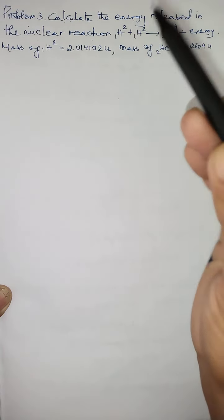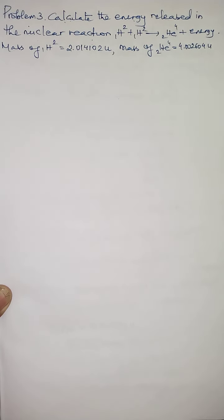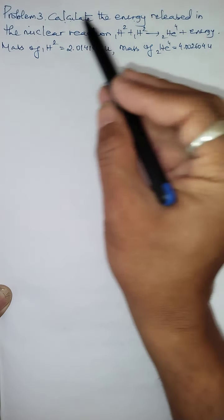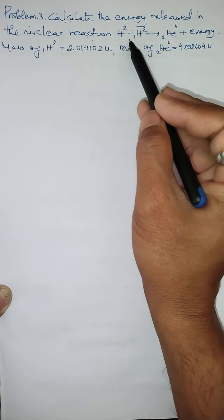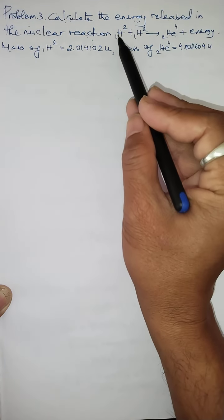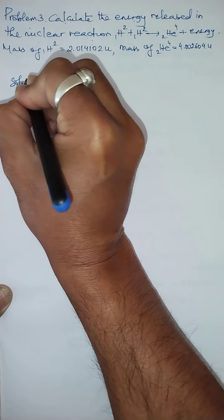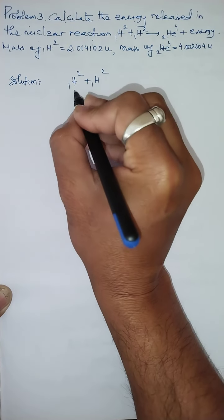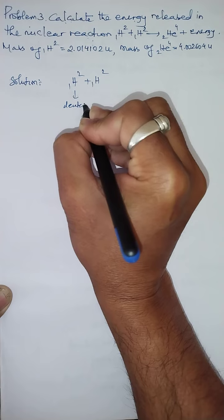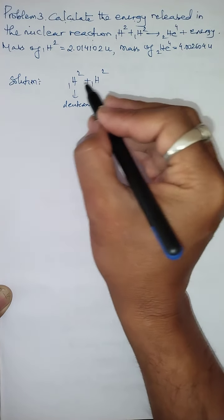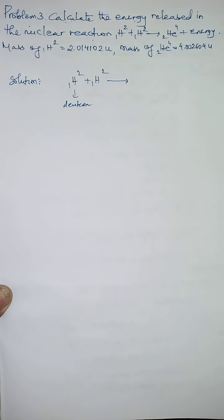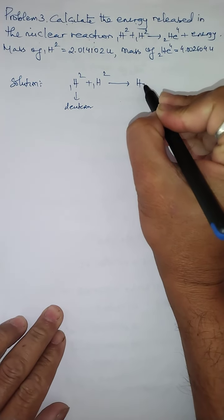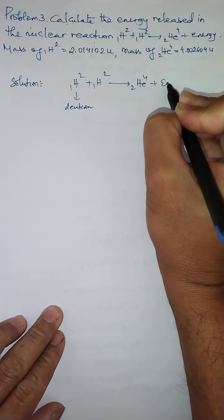This numerical problem is based on a nuclear fusion reaction. Fusion means combining lighter elements to form a heavier nucleus. The question asks us to calculate the energy released when H-2 (deuterium) combines with another H-2 (deuterium). Deuterium is an isotope of hydrogen, and when two deuterium atoms fuse together, they form a heavy nucleus — helium-4.